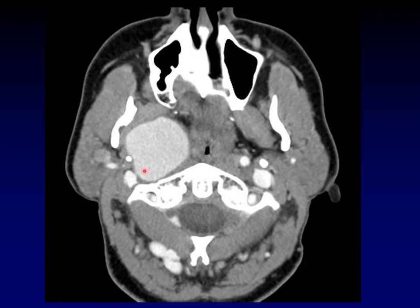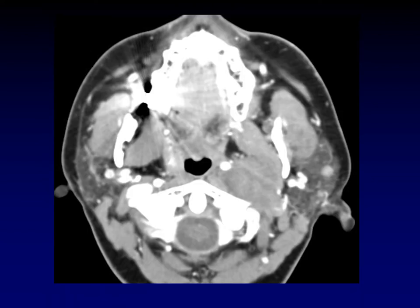Here's an example of a pseudoaneurysm. Look how it's displacing the parapharyngeal fat predominantly anteriorly and a little bit medially — that medial displacement tells us it came from the post-styloid parapharyngeal space rather than the retropharyngeal space. Also, there is no carotid artery visible; this is all one big pseudoaneurysm. Here's an example of a nerve sheath tumor — a neurofibroma — again displacing the parapharyngeal fat predominantly anteriorly and a little bit medially. This is a post-styloid mass.